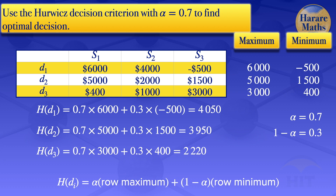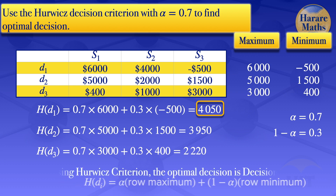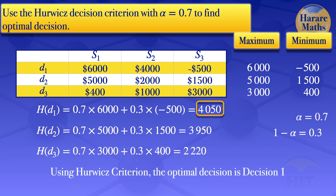To choose the optimal decision when using the Hurwicz decision criterion, we choose the decision which has the highest Hurwicz value. The highest Hurwicz value is 4,050. Therefore, using the Hurwicz decision criterion, the optimal decision is decision number 1.